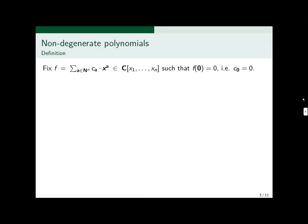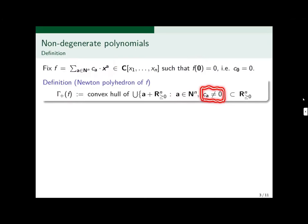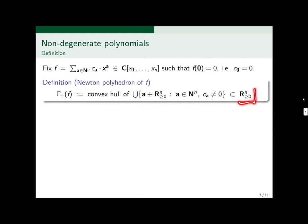Fix a complex polynomial such that it vanishes at the zero point. We'll write a polynomial like this. The first object we're interested in is the Newton polyhedron of F. We define it as follows: you look at all the vectors in N^N such that the corresponding coefficient in F is non-zero. You take the vector A, add an upper half space, take the union of all these, and then take the convex hull. This sits in this upper half space.